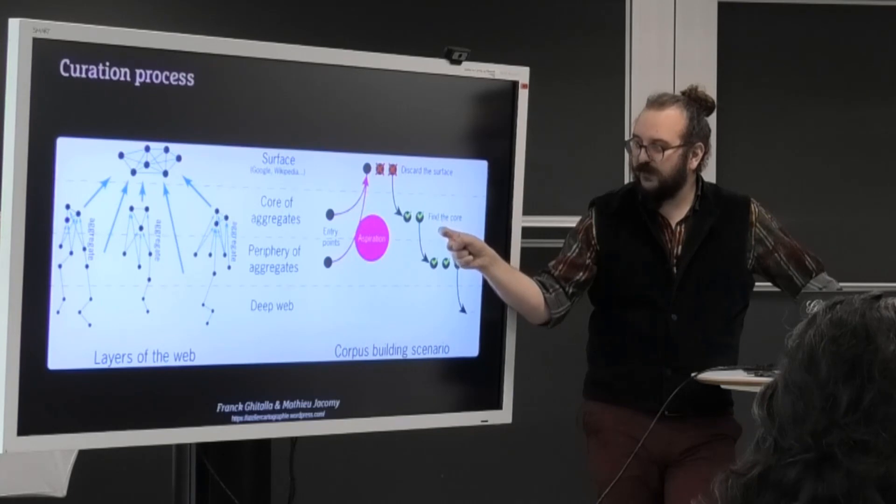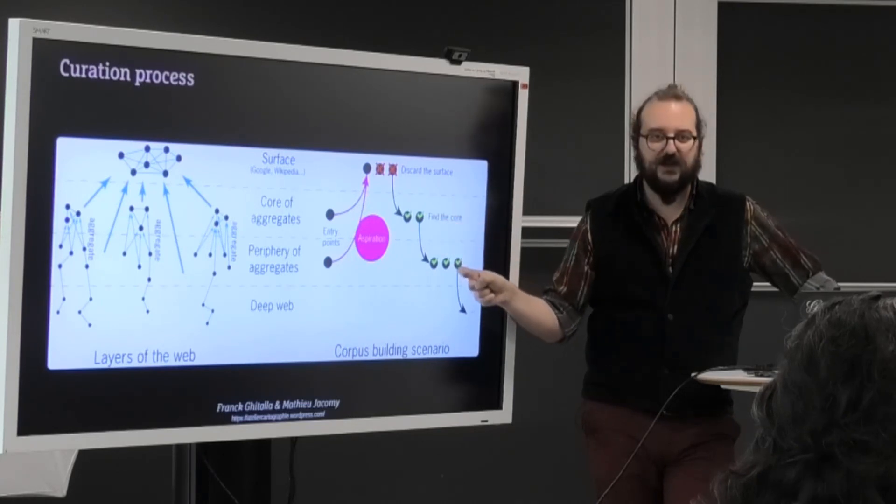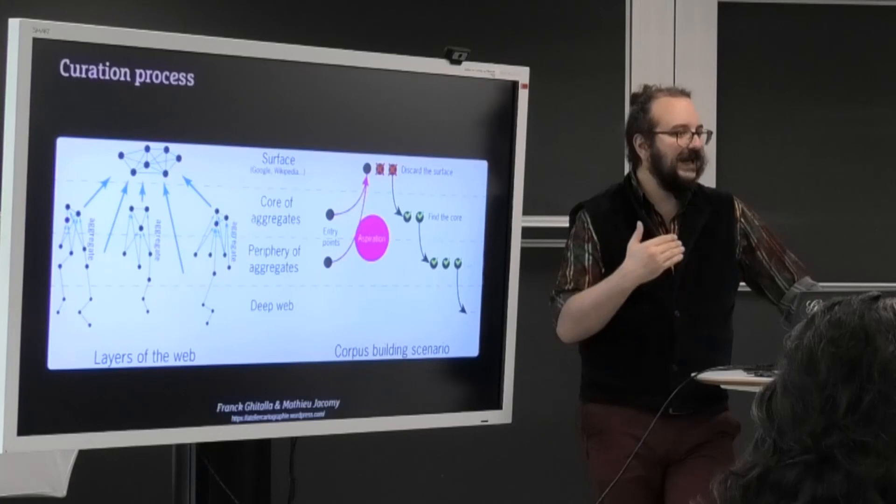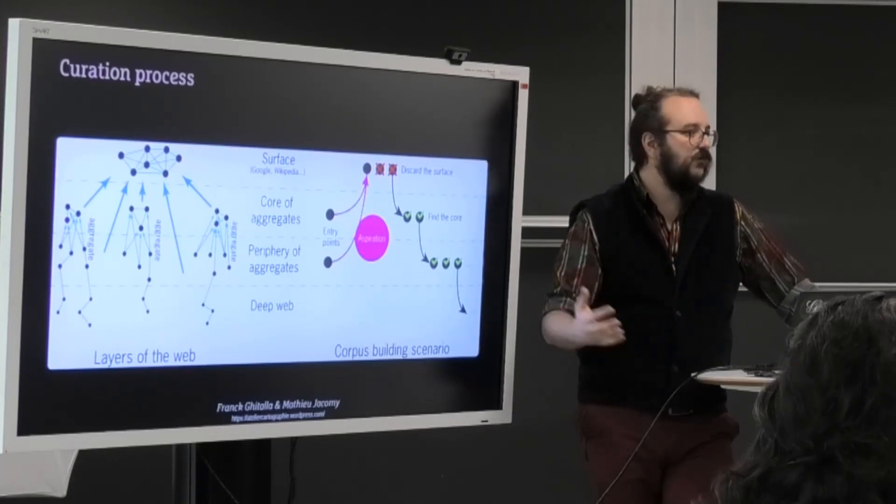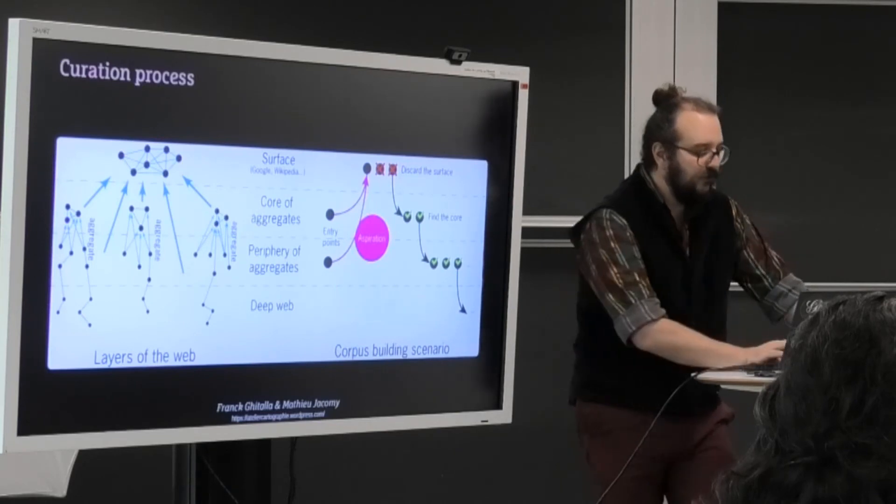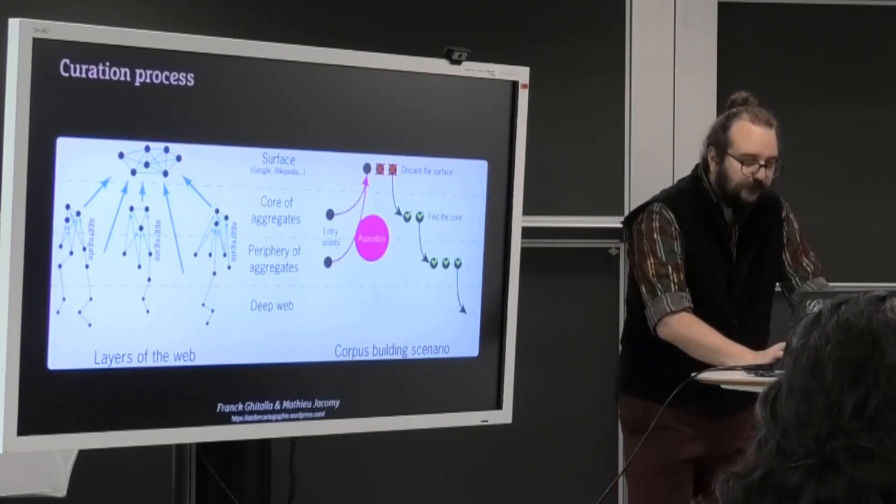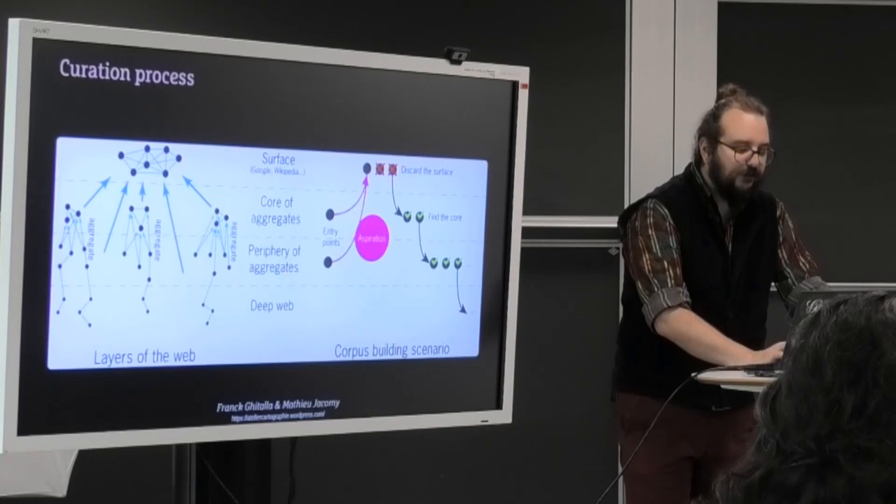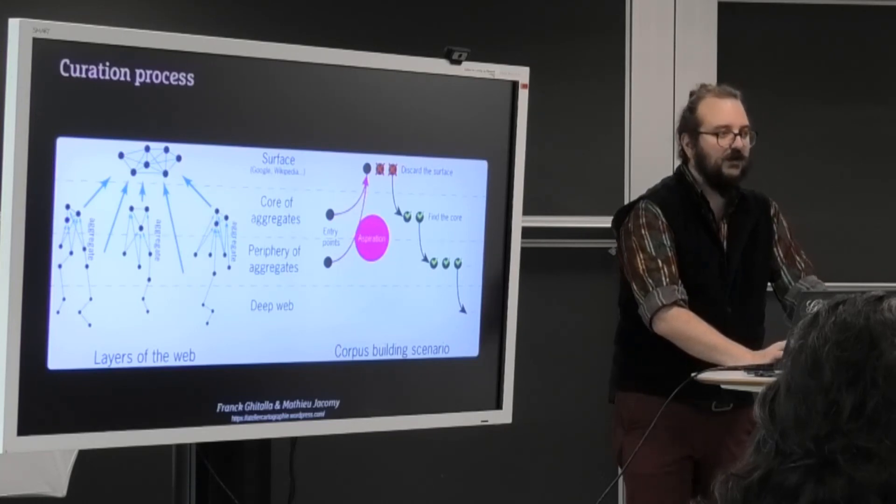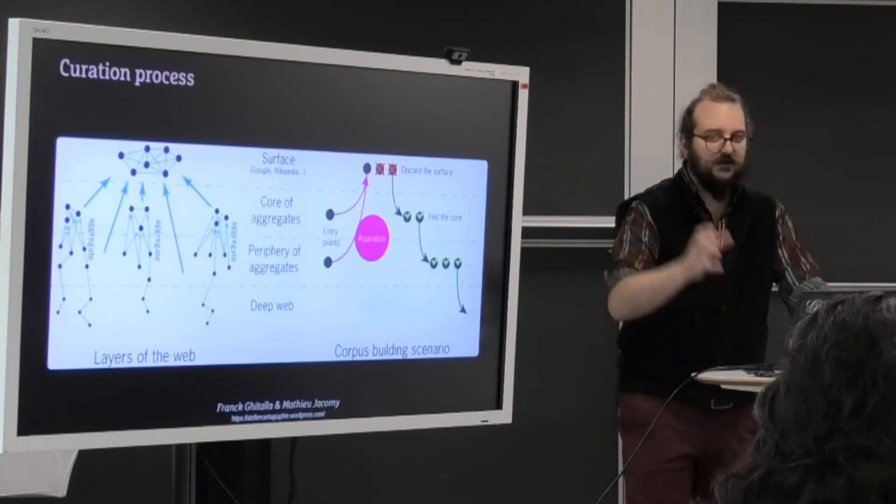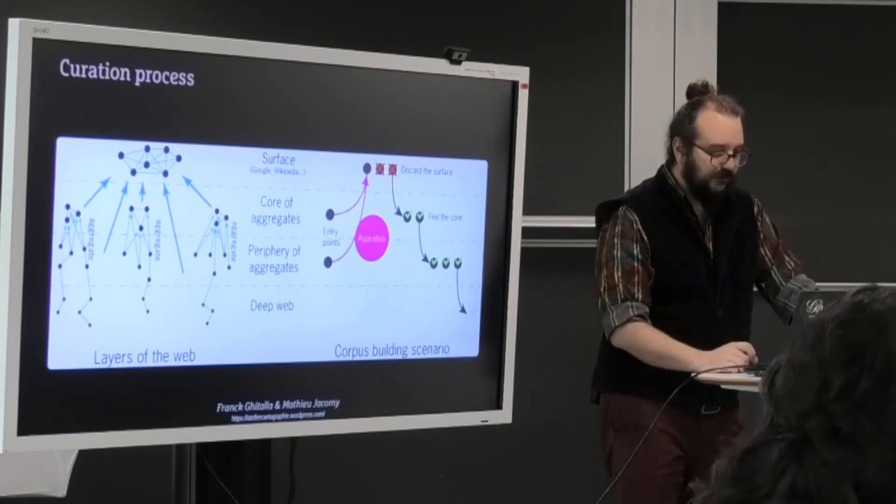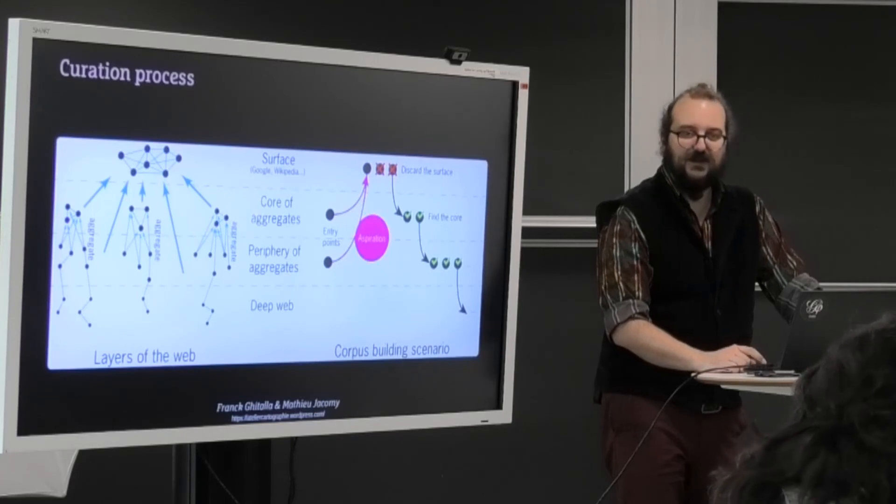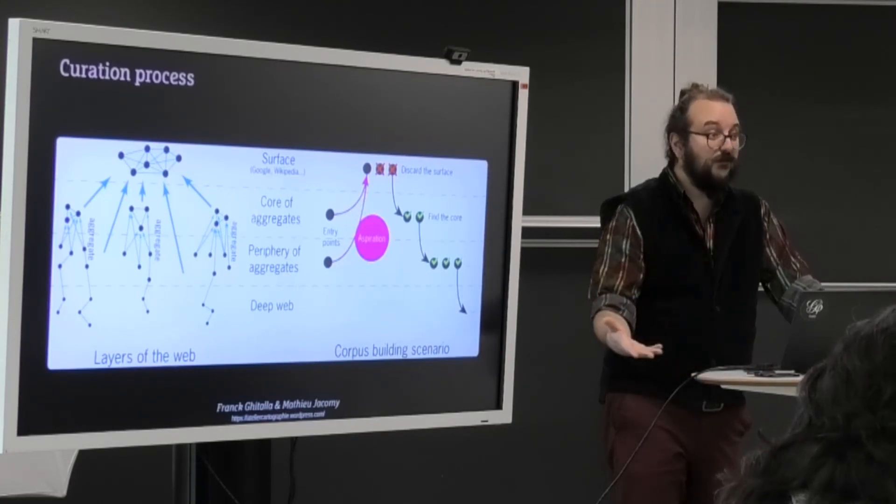And then you have this diminishing return effect that will kick in, and you will find less and less good content compared to a lot of noise. And this is because you are moving down from the core of the aggregate to the periphery of the aggregate and towards the deep web. So that's when you find less and less relevant resources. And that's how most of the corpus harvesting processes unfold in practice.